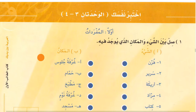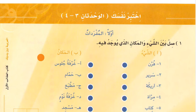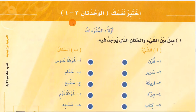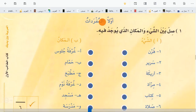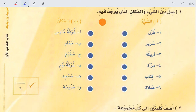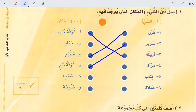Then you have a question paper made from Unit 3 and Unit 4. He is asking you to join the thing with the place where it is found. The first thing is furn — oven — oven is found in the kitchen, so you join it with gym (kitchen). Sareer — bed — is found in the bedroom, ghurfat an-nawm. Areka is found in the living room, ghurfat al-juloos. In this way you will join them.